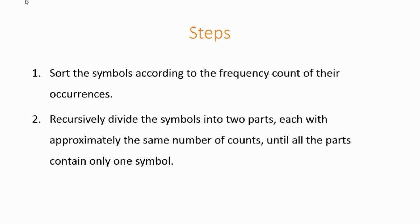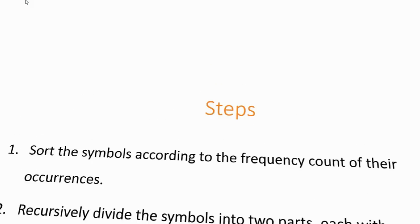Here are the steps used for the Shannon-Fano algorithm. Step 1: sort the symbols according to the frequency count of their occurrences. Step 2: recursively divide the symbols into two parts, each with approximately the same number of counts, until all parts contain only one symbol.